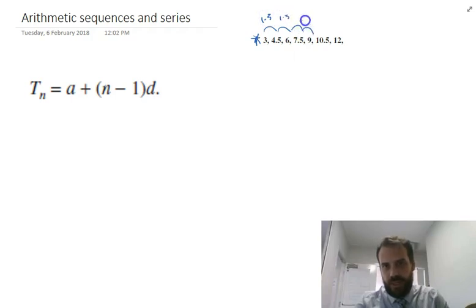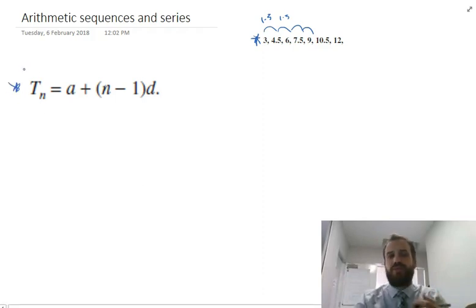It's called an arithmetic sequence because we're adding on 1.5 each time. A constant number is being added each time. This formula tells you the nth term.